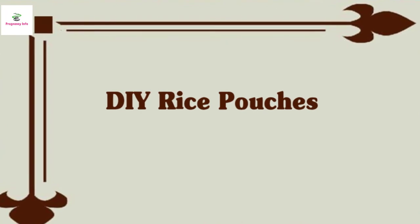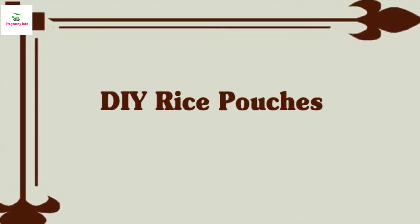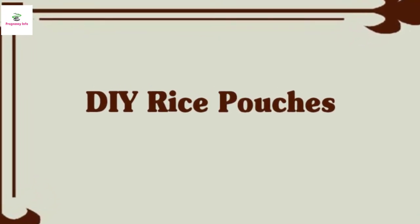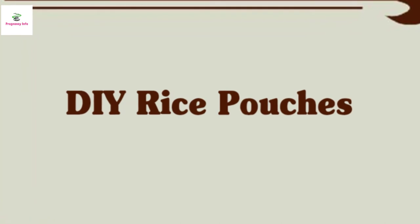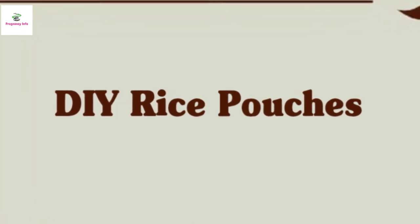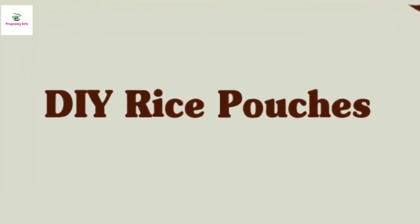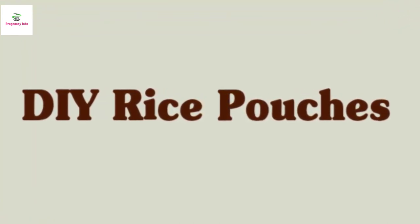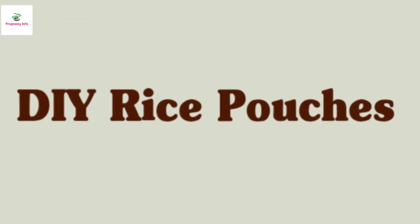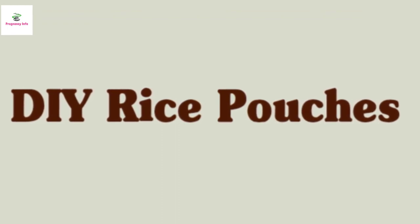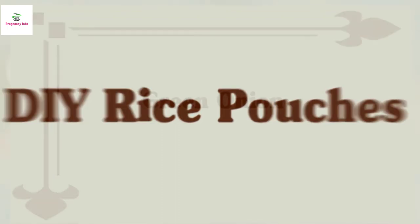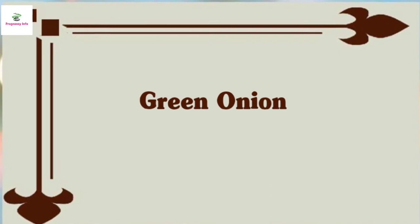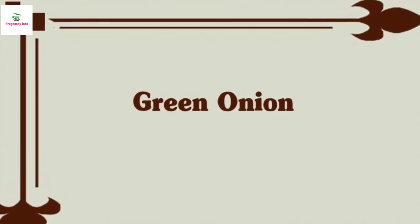DIY rice pouches: place one tablespoon of raw rice into the middle of a washcloth, wrap it up, and tie it off with a rubber band before placing it in the freezer. Wet the pouch a little before giving it to your baby to hold and chew — babies love the texture of the rice.